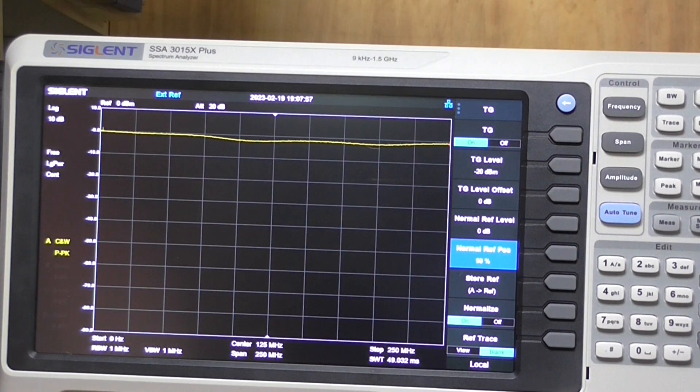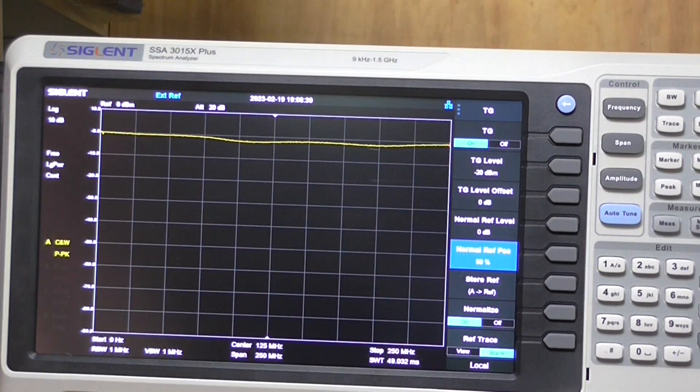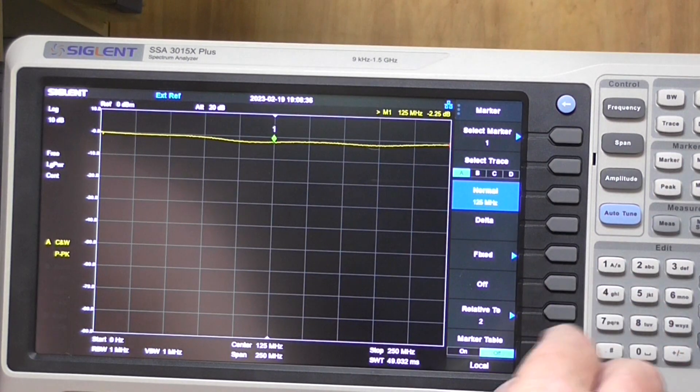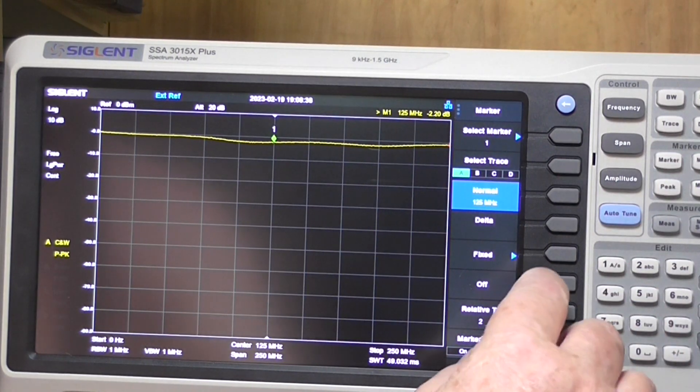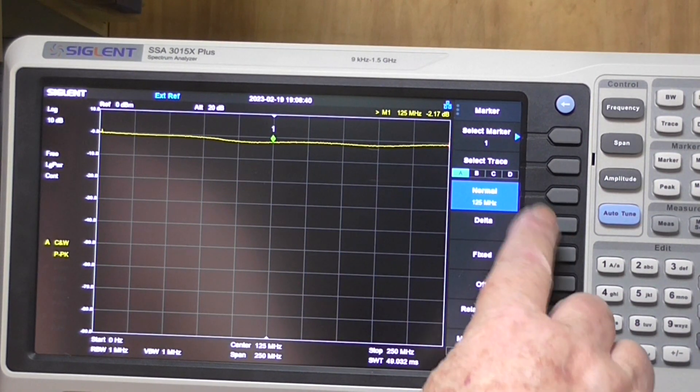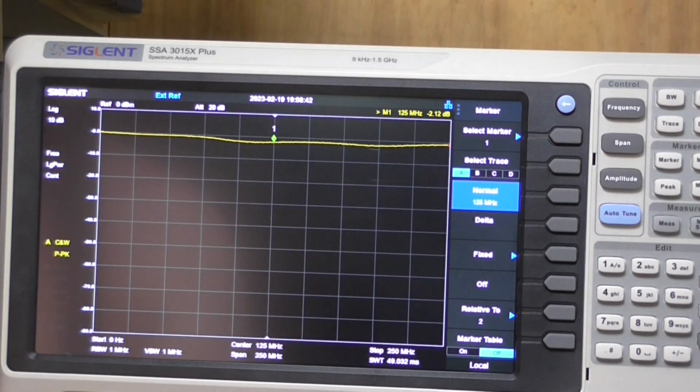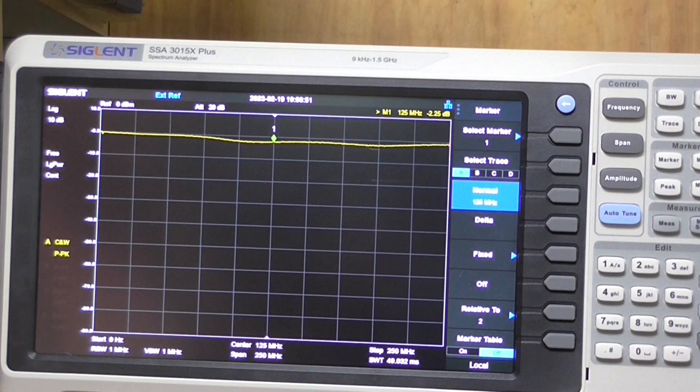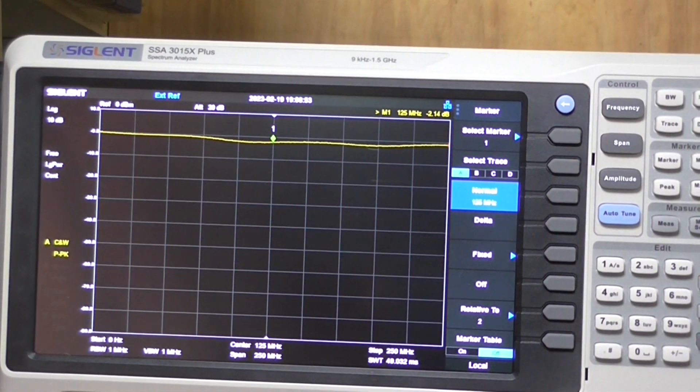Let's start some tests. We'll set a marker at the halfway mark—125 megahertz. At 125 meg we've got about minus 2 dB.